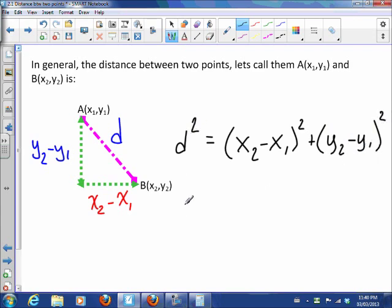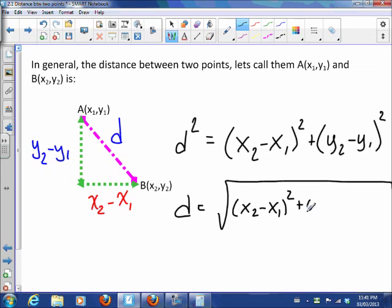And now to get rid of that square, I just have to square root everything. So in the end, we come up with this distance formula that says distance is the square root of the difference of the x values squared plus the difference of the y values squared.